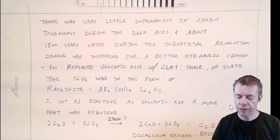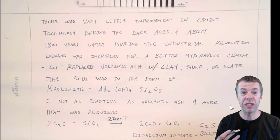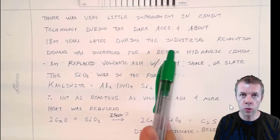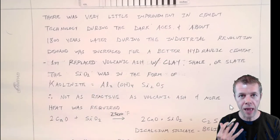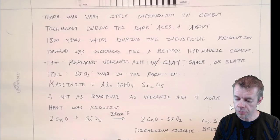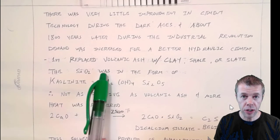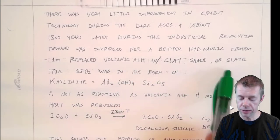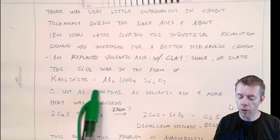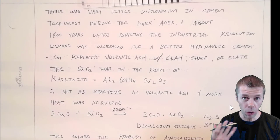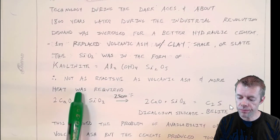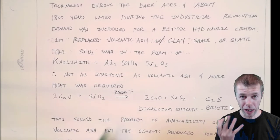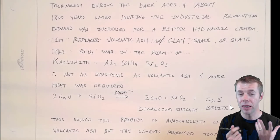There were very little improvements in the cement technology during the Dark Ages. Actually, not much technology at all developed during the Dark Ages, except for weapons, I guess. But, about 1,800 years later, during the Industrial Revolution, demand was, again, increased for a hydraulic cement. This is in England now. They're really pushing for this. France, as well. The first thing they did is they studied what the Romans did, and they looked at this volcanic ash, and they said, You know what? Maybe we could use clay, or shale, or slate. The silicon dioxide was in this form, Kaolinite. It had aluminum in it, as well. Think of it as, like, tile. But, it's not as reactive as this ash, so more heat was required. But more heat, what's that going to mean? That means more energy. More energy means it costs more. It costs more for the environment to make, but it's what they needed to do.